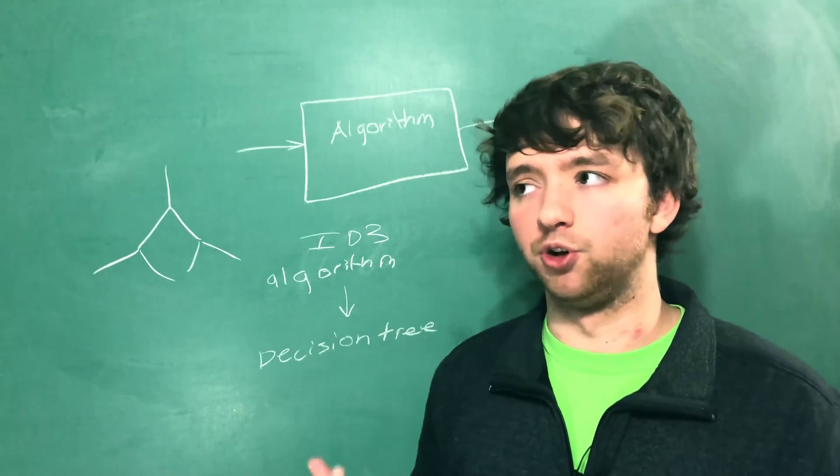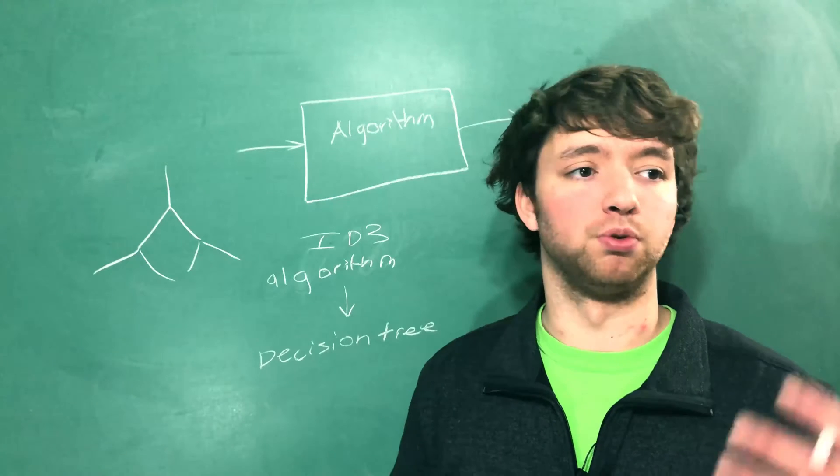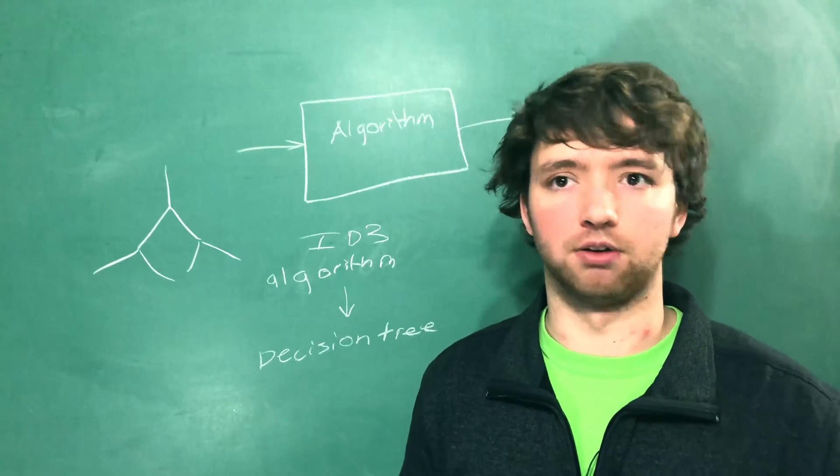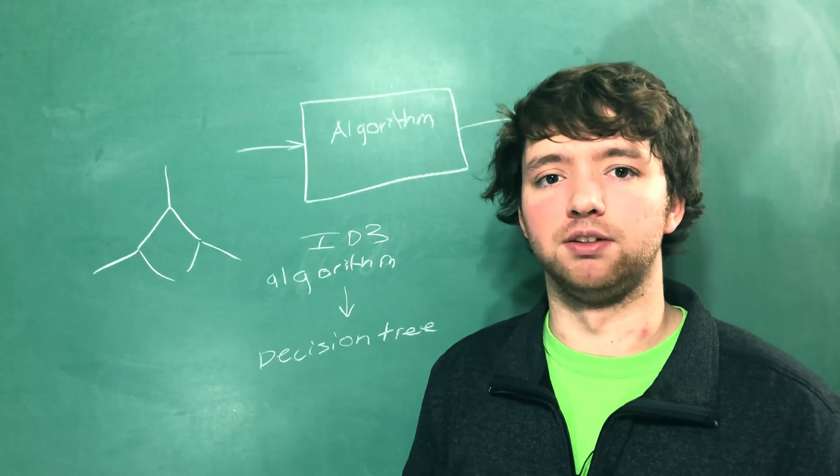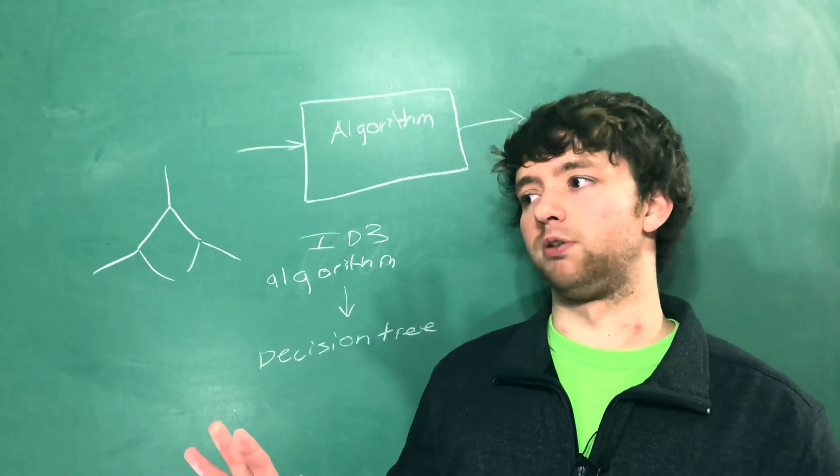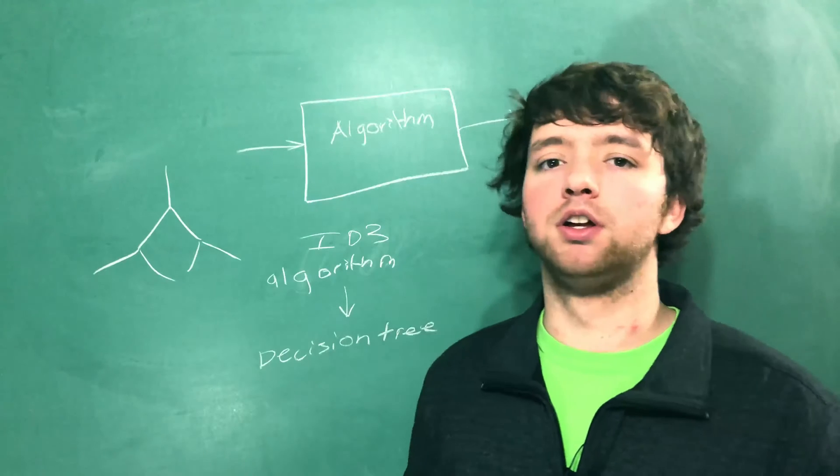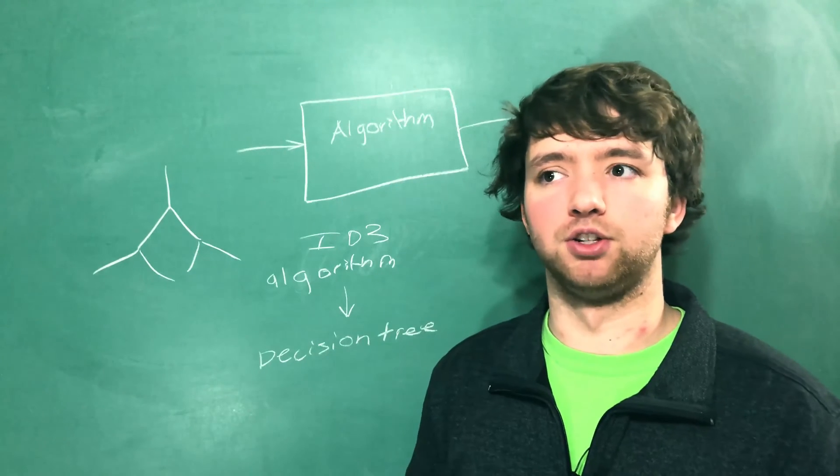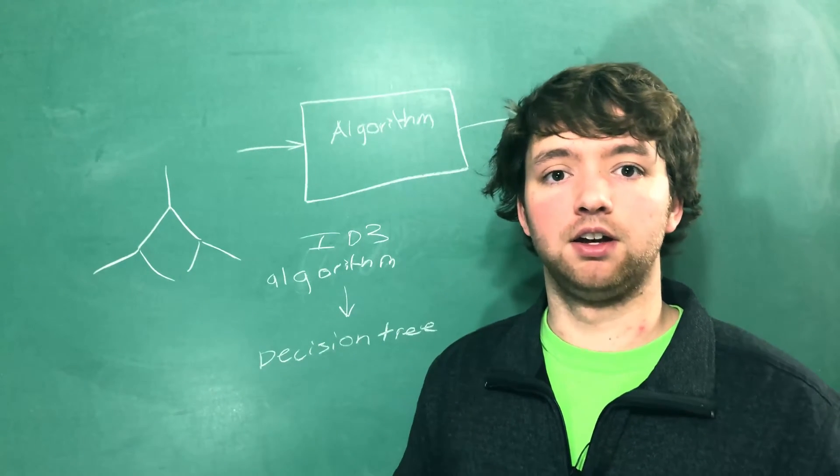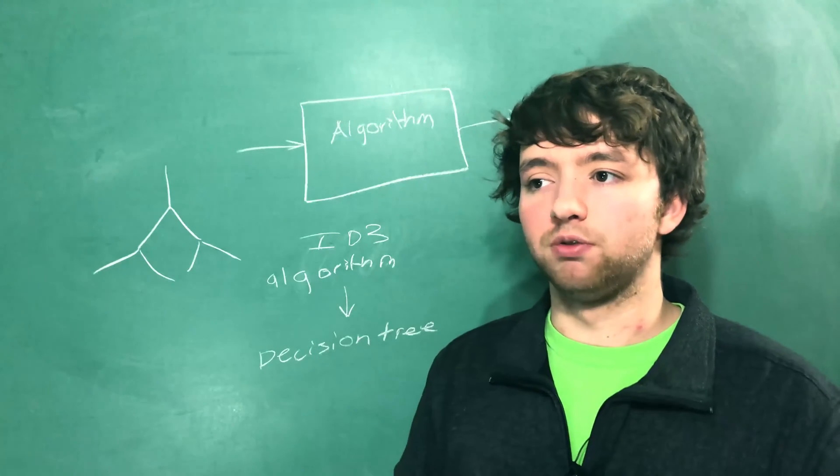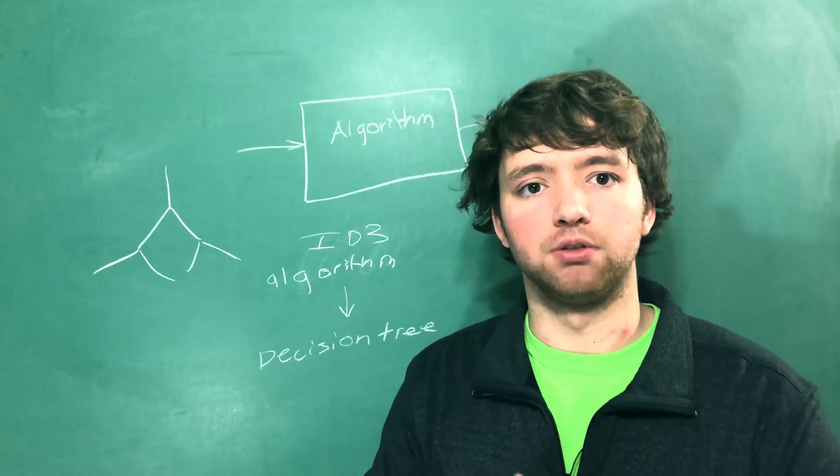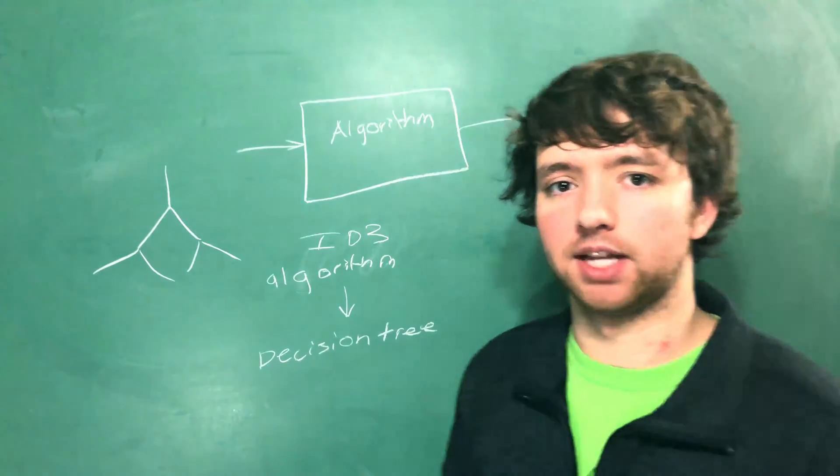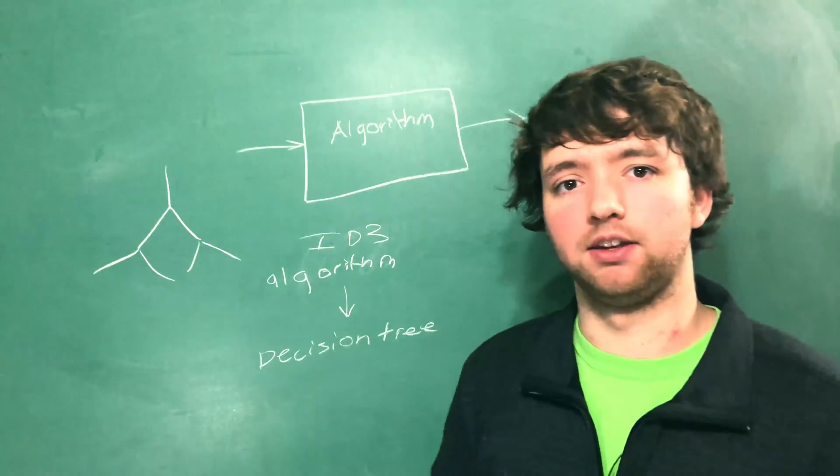And you're probably going to end up hearing people refer to models as algorithms and algorithms as models and try not to be annoying about it. Like, oh, that's not an algorithm, bro. That's a model. It honestly doesn't matter because the two go hand in hand. As you use these algorithms, the algorithms are the things that allow you to model your data. So yeah, that's essentially that.